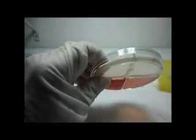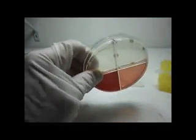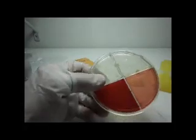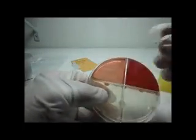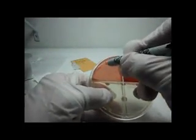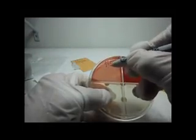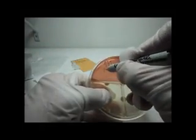The lid is now placed on the IDSX dish. The bottom of the dish is now labeled with necessary information. The dish is now returned to the pouch and incubated overnight at 35 degrees centigrade.